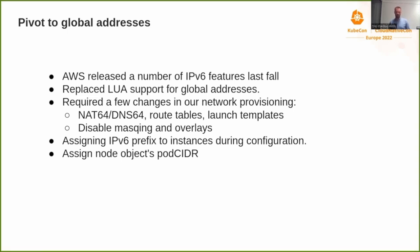Launch templates also don't allow you to configure both an IPv6 address and a prefix at instance creation time. So in the launch templates, we said that instances are assigned automatically a single IPv6 address, while during the bootstrapping of the instance, we had to create our own logic for provisioning an IPv6 prefix for the instance. We also had to take the assigned IPv6 prefix and give it to the corresponding node object, so that the cluster knows what IP addresses are scheduled for the given instance to receive.